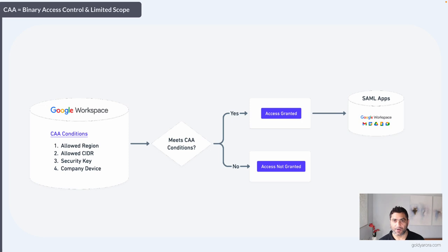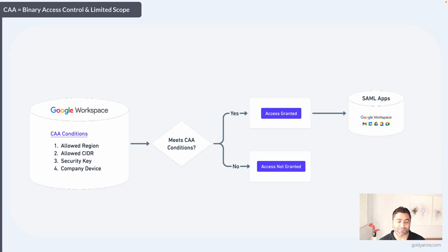Context-aware access can be applied on Google Workspace native applications such as Gmail, Drive, Meet, Chat, etc., and on SAML applications where Google is acting as your identity provider. So why do you need BeyondCorp then? Let's take both scenarios — binary access control and limited scope — and see how BeyondCorp can help us go one step further.